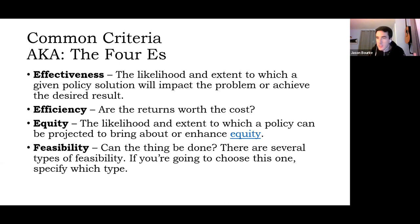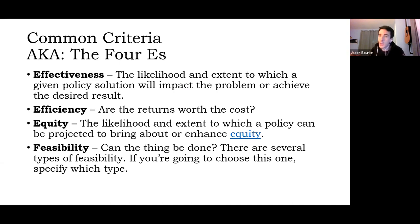And they make sense on their face. Effectiveness is the likelihood and extent to which a policy solution will impact the problem or achieve our desired result — the degree to which we can expect that policy solution to get us to that objective and fulfill our policy goals.